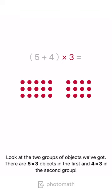Look at the two groups of objects we've got. There are 5 times 3 objects in the first and 4 times 3 in the second group.